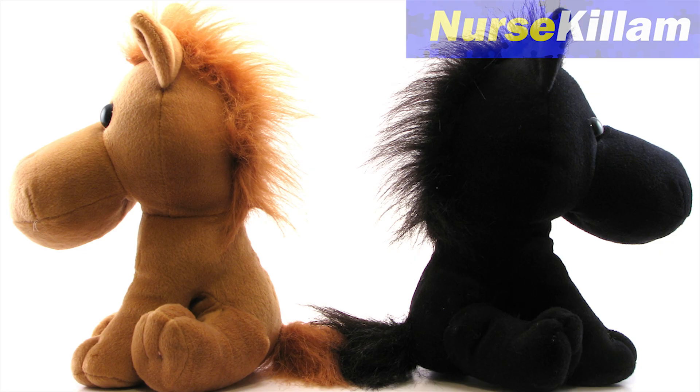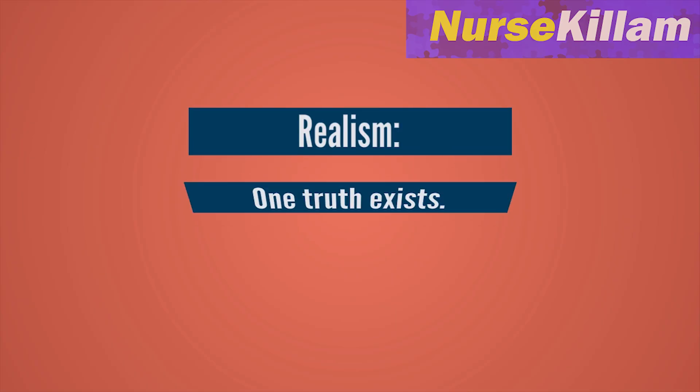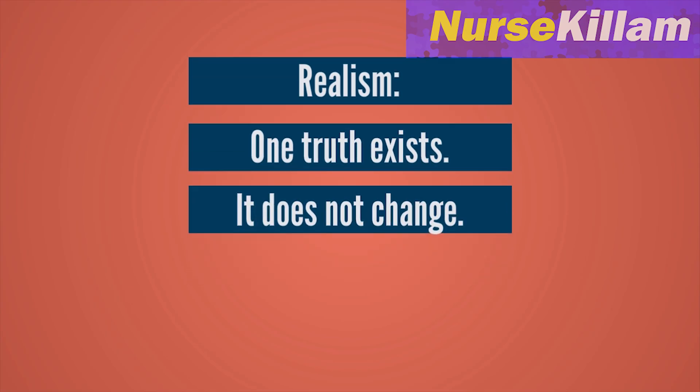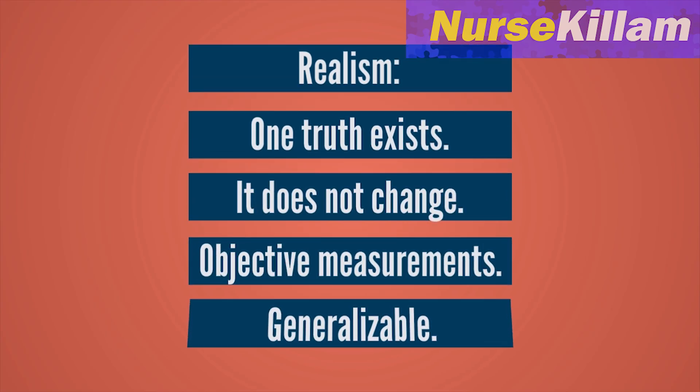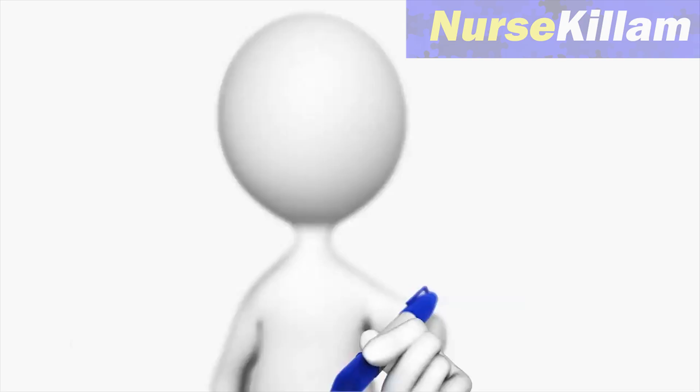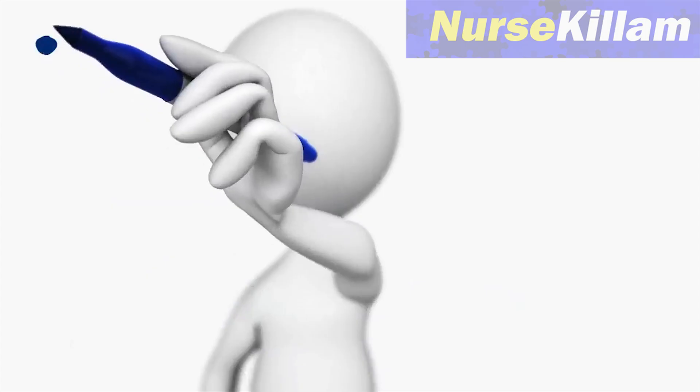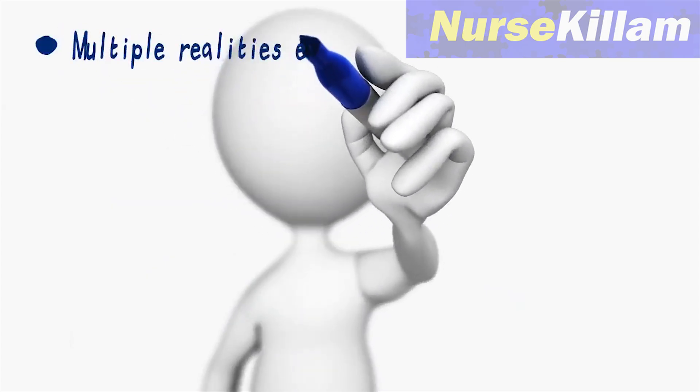The opposite view of reality is called relativism. If you look at what I just said about realism, you can probably guess that everything relativists believe is the exact opposite of what realists believe. Using that logic, you know that relativists believe in multiple versions of reality.